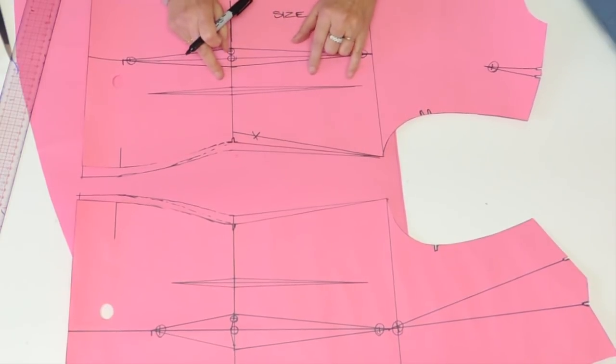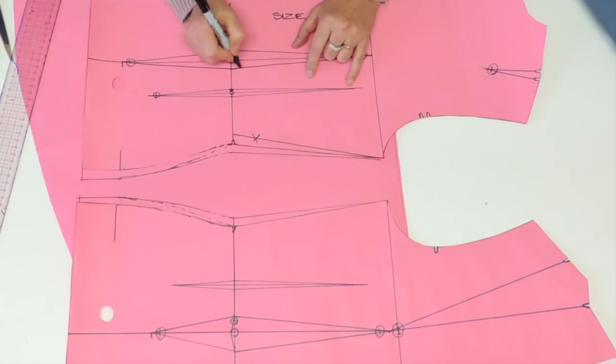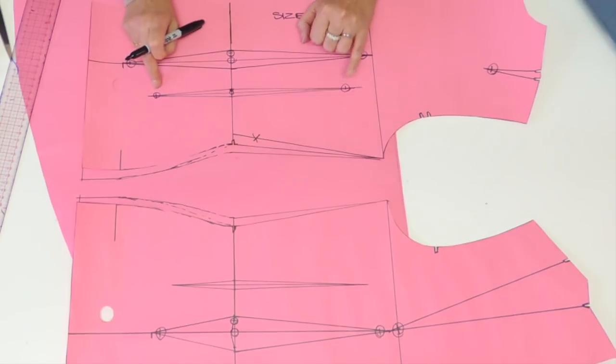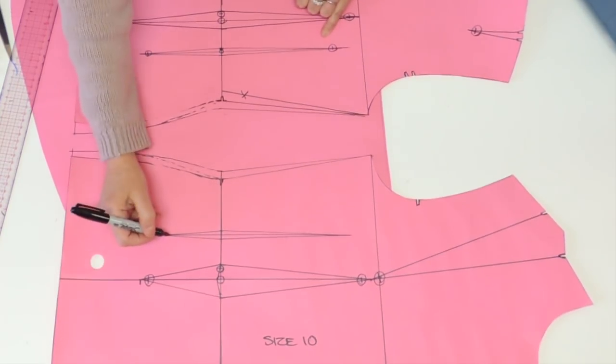This second dart is also going to need four punch holes. So center, three millimeters in and one centimeter down. One up, one down. Same thing on my front.